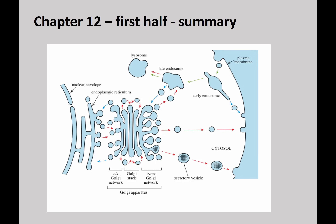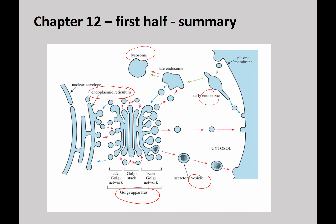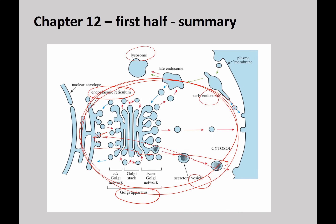In summary, we've covered the endomembrane system: the ER, the Golgi, and vesicles. We'll talk more about lysosomes and endosomes in the second half of the chapter. There can be lots of different destinations. We've talked about anterograde and retrograde movement. It's a really complex system — an internal endomembrane system where membranes from one location can go to another, and can also come back.